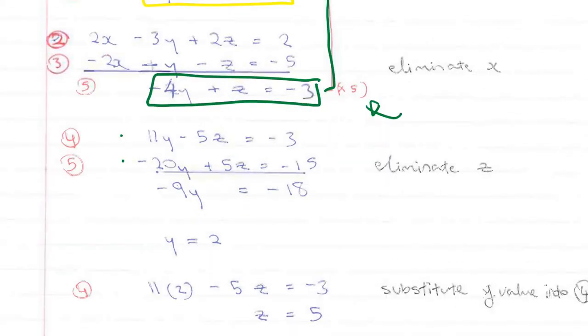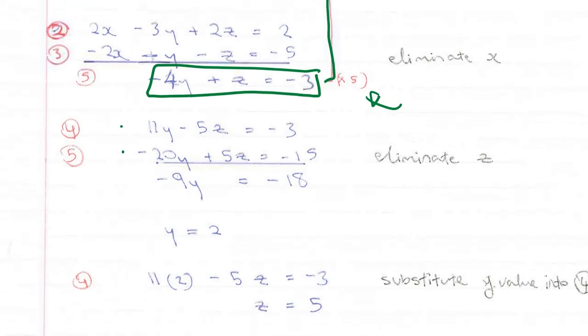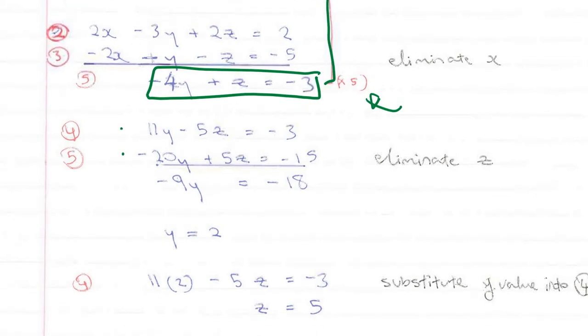Now, I take that value of 2 for y and I plug it back into either equation 4 or 5. Plug it into 4, and I am left with z is equal to 5. So, we are substituting that y here. We are just replacing that y with 2 and we are left with one equation in z. So, z is equal to 5.